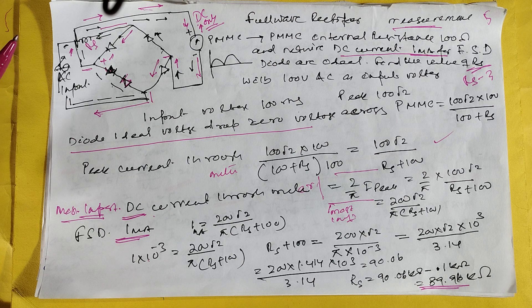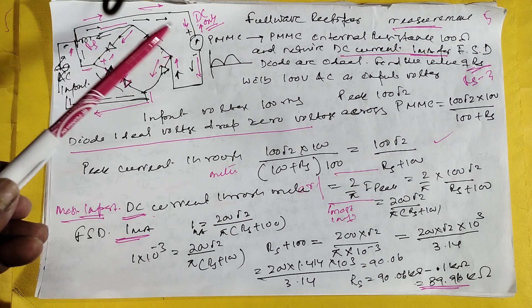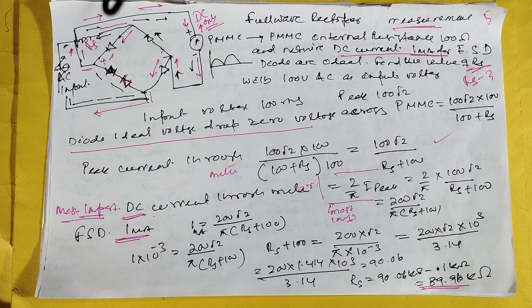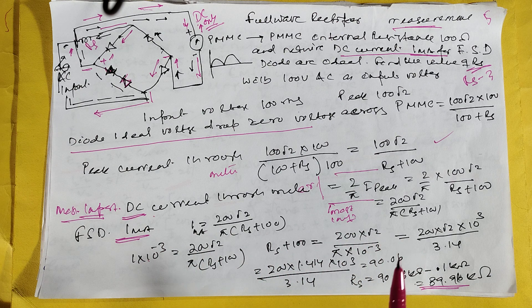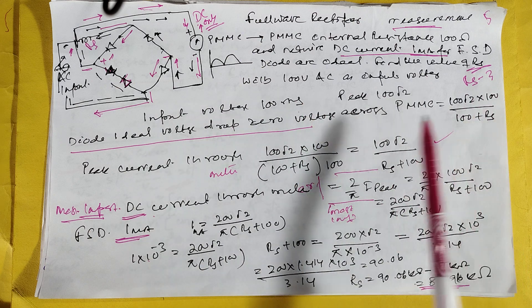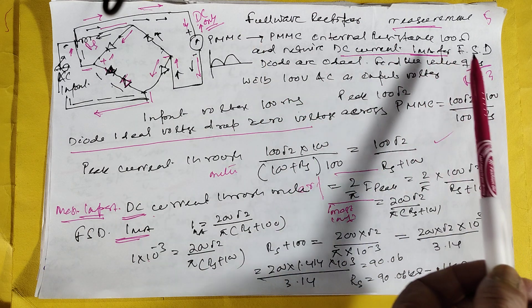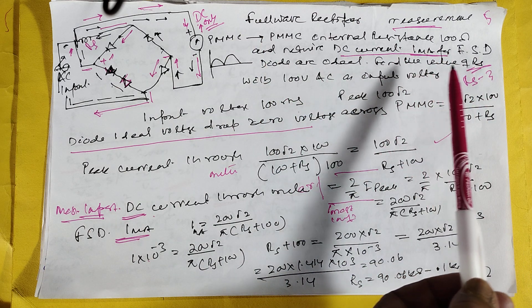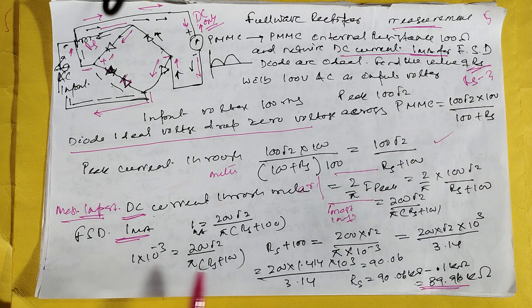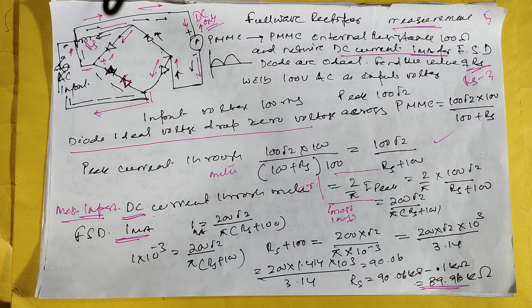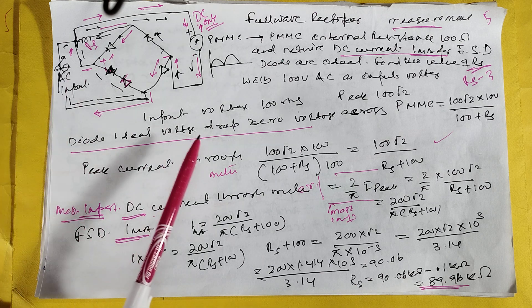Here, there is a permanent magnet moving coil ammeter. This ammeter needs, for full-scale deflection, it needs how many amperes? 1 milliampere. Full-scale 1 milliampere. You first calculate what is the peak current through the PMMC.